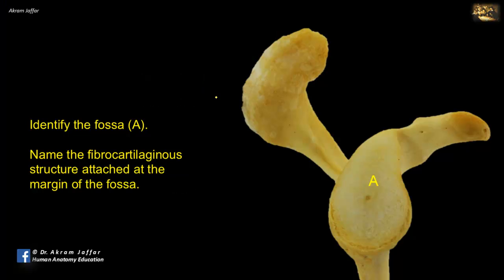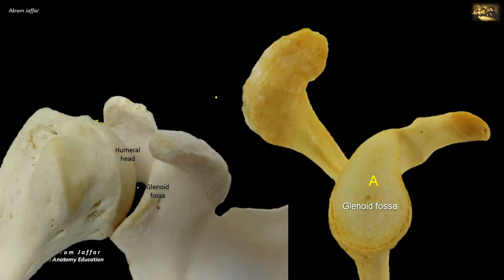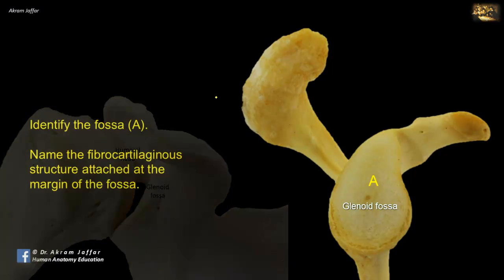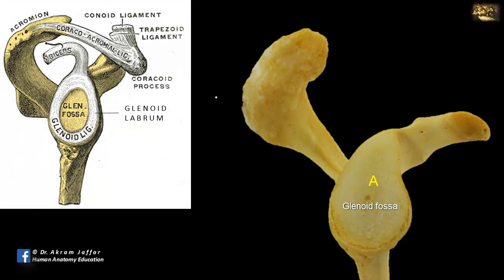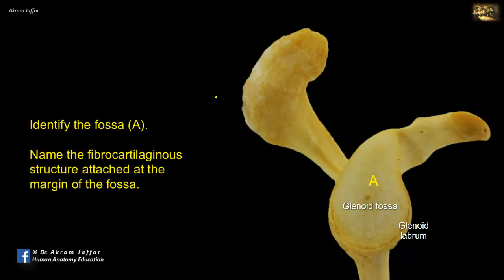Identify the fossa and name the fibrocartilaginous structure attached at its margin. This is the small shallow glenoid fossa that forms a socket for the ball formed by the large head of the humerus. Only one-third of the head articulates in the fossa at a time, making the shoulder joint more mobile but less stable. The glenoid fossa is deepened slightly by a rim of fibrocartilage called the glenoid labrum, but the fossa remains shallow, providing more mobility at the expense of stability.